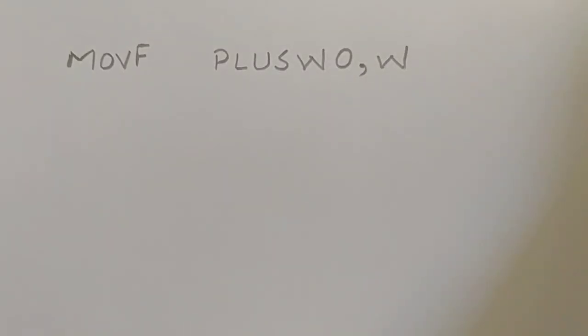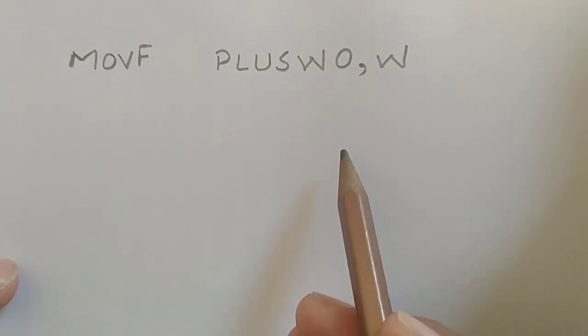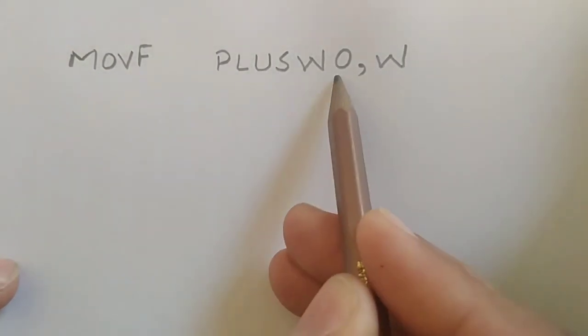Bismillahirrahmanirrahim, assalamu alaykum. A question was posted on my video about this move instruction: MOVF PLUSW0,W. This is basically a pointer which is pointing to file select register, and here we are using zero.